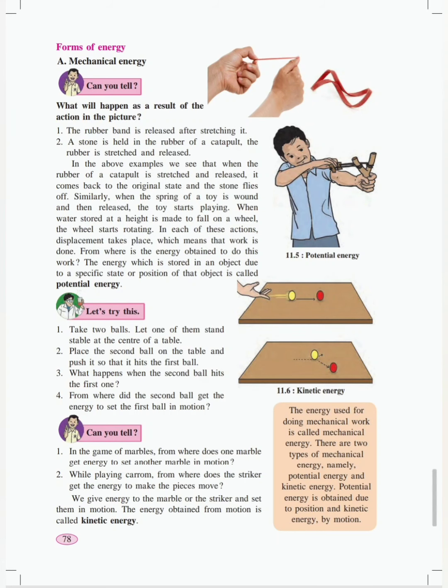When the object is in rest position, that time there is some kind of energy which is already stored in that object. That kind of energy is called the potential energy. On the other hand, the energy obtained from motion is called kinetic energy.